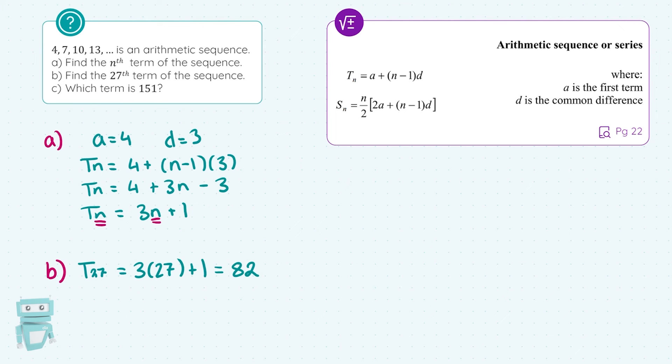Part C then asks which term is 151. So this is kind of going backwards. We have to try to find which term. So we're looking for which TN, which general term is equal to 151. So what I do is I take my formula 3N plus 1, which is TN, which gives us any nth term, and I let that equal 151.